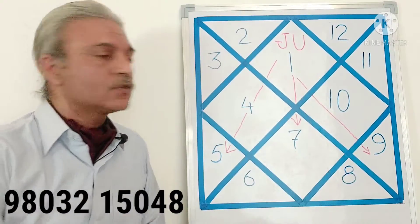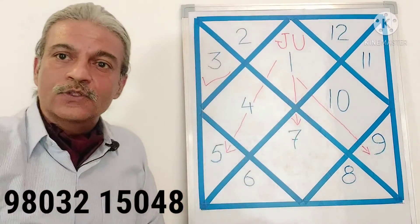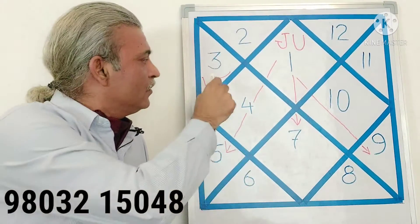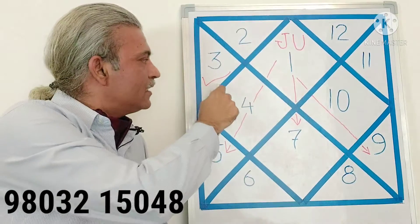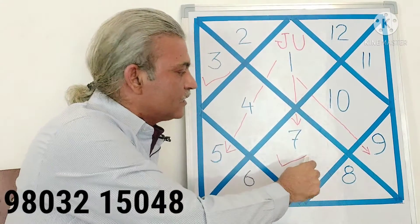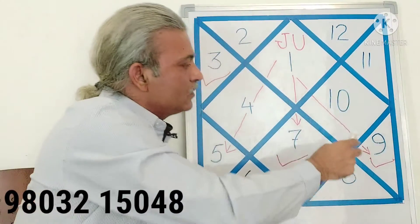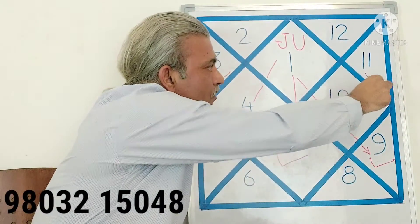In case Jupiter is sitting in any other house, let us say Jupiter is sitting in the 3rd house, then it will aspect the 5th, 7th and 9th house from there. That is: 1, 2, 3, 4, 5, this house; 6th, 7th house; 8th and 9th house, this house.